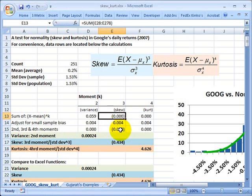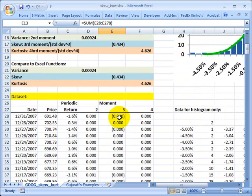So I'm just summing for each periodic return minus the average periodic return, then I cube that. If I come down here,